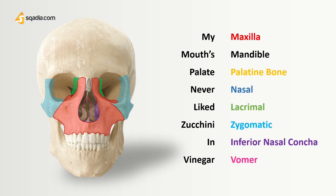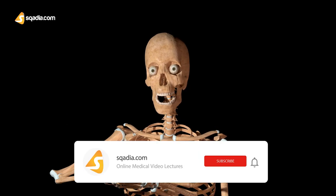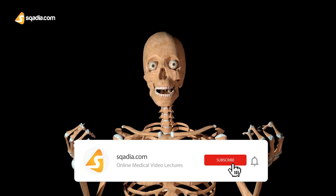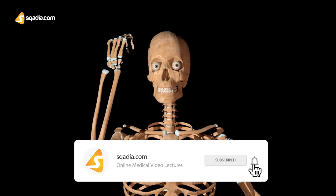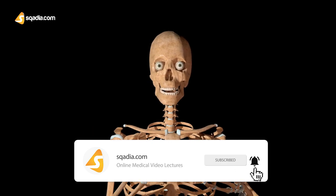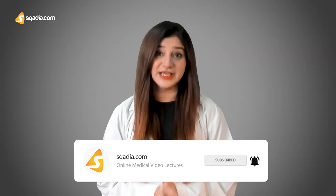You can find detailed lectures on all these bones at scadia.com. That is all my part. Myra, please continue with details. Today, we are going to study the smallest facial bone, that is the vomer.